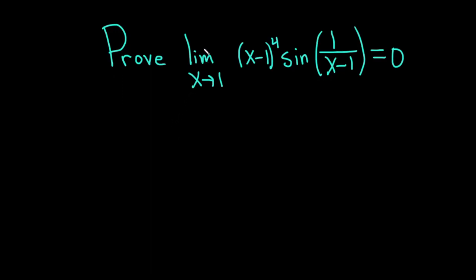Hello, in this video we're going to prove that the limit of x minus 1 to the fourth power times the sine of 1 over x minus 1, as x approaches 1, is equal to 0. Let's go ahead and go through this proof.